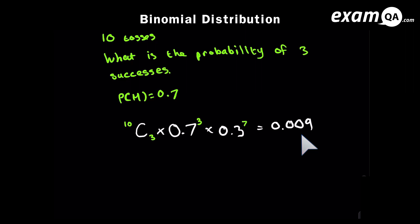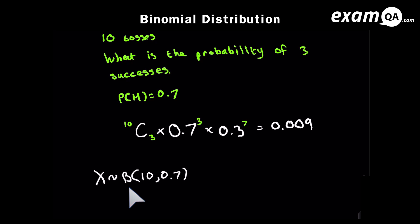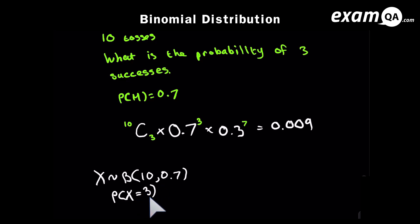We need to know the notation for binomial distribution. What I've written here is simply what we have in this scenario. This reads as: X is distributed binomially. Ten is the number of goes you have, followed by a comma and the probability of success. In the exam it might be written in this notation form, and you need to get used to that.